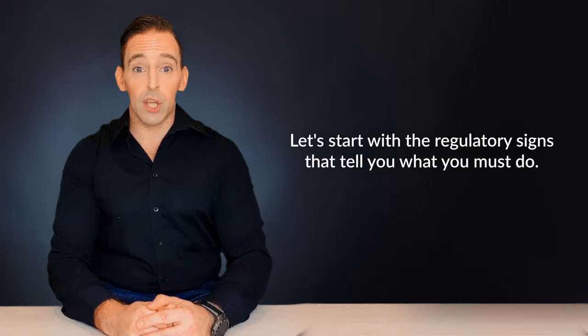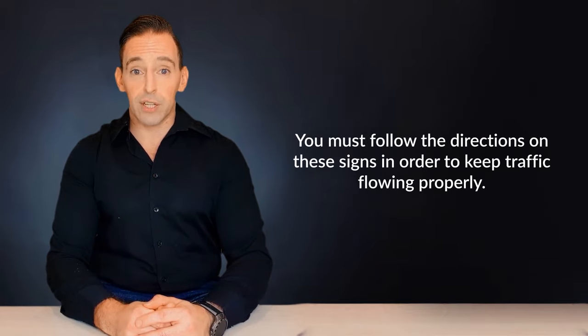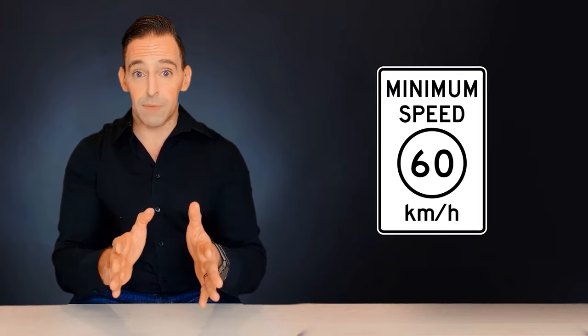Regulatory signs that tell you what you must do. They are used when drivers are required to carry out a designated task, such as turning or keeping a minimum speed. You must follow the directions on these signs in order to keep traffic flowing properly. Some examples are minimum speed signs, keep ahead signs, and left or right turn only signs.